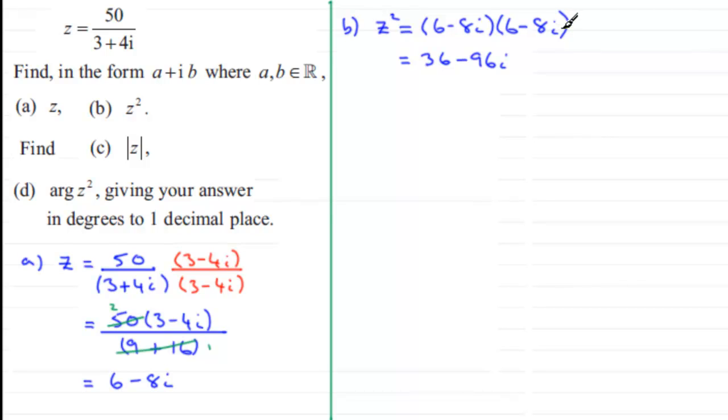i squared though is negative 1 so you're going to end up with minus 64. Tidying this up, first 36 minus 64 gives us minus 28 and then you've got the imaginary part minus 96i.